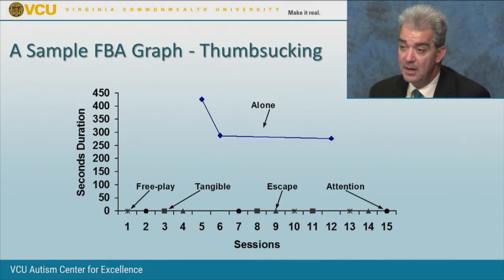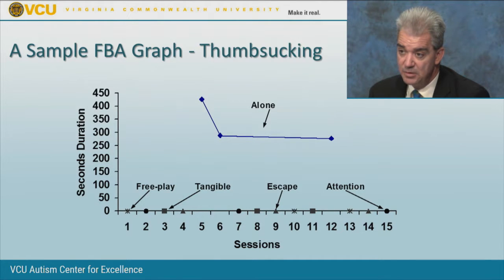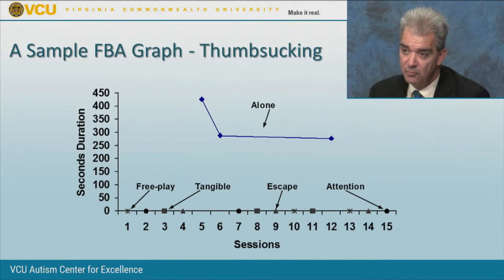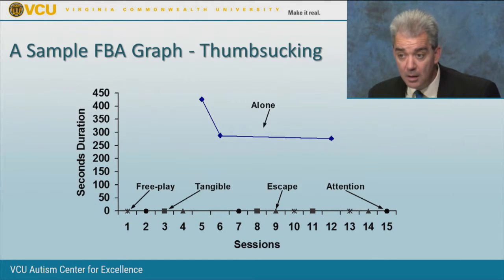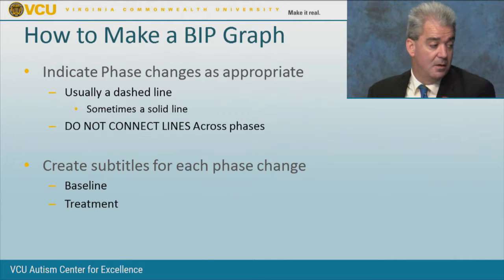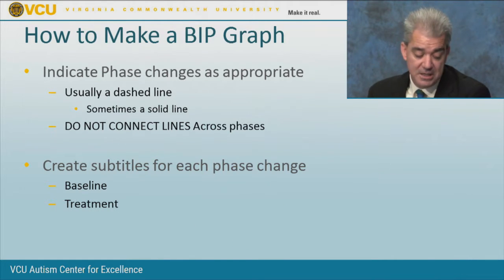Here's an example: thumb sucking behavior from a teacher I worked with in Pennsylvania. It occurred mostly during alone conditions and almost never during any of the other conditions — free play, tangible, escape, and attention. They tracked how many seconds of thumb sucking occurred. Sessions were 10 minutes long — 600 seconds maximum — but the highest observed was around 450 seconds, about seven and a half minutes. That's our FA graph. So that's how an FA graph is done.